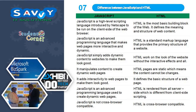The difference between JavaScript and HTML: JavaScript is a high-level scripting language introduced by Netscape to run on the client side of the web browser. HTML is the most basic building block of the web — it defines the meaning and structure of web content. JavaScript is an advanced programming language that makes web pages more interactive and dynamic. HTML is a standard markup language that provides the primary structure of a web page. JavaScript adds dynamic content to websites to make them look good, while HTML works on the look of the website without interactive effects.